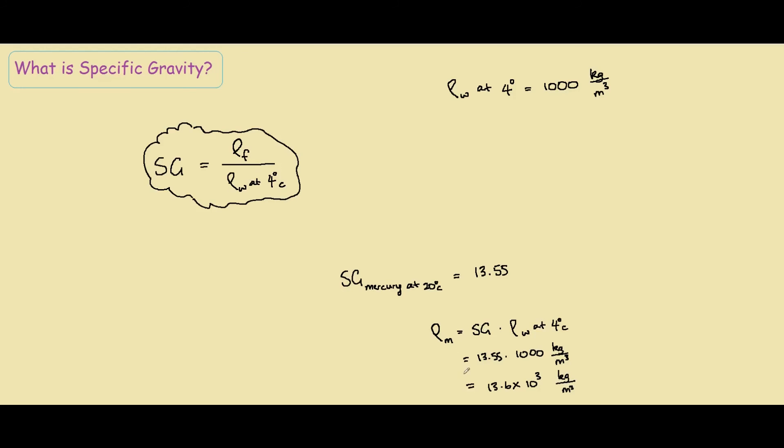Same thing, if we were given the density of mercury at 20 degrees, we could find the specific gravity. So diagrammatically, if we have 13.55 as our specific gravity of mercury, this means that for one unit of mercury, it has the same density as 13.55 water.